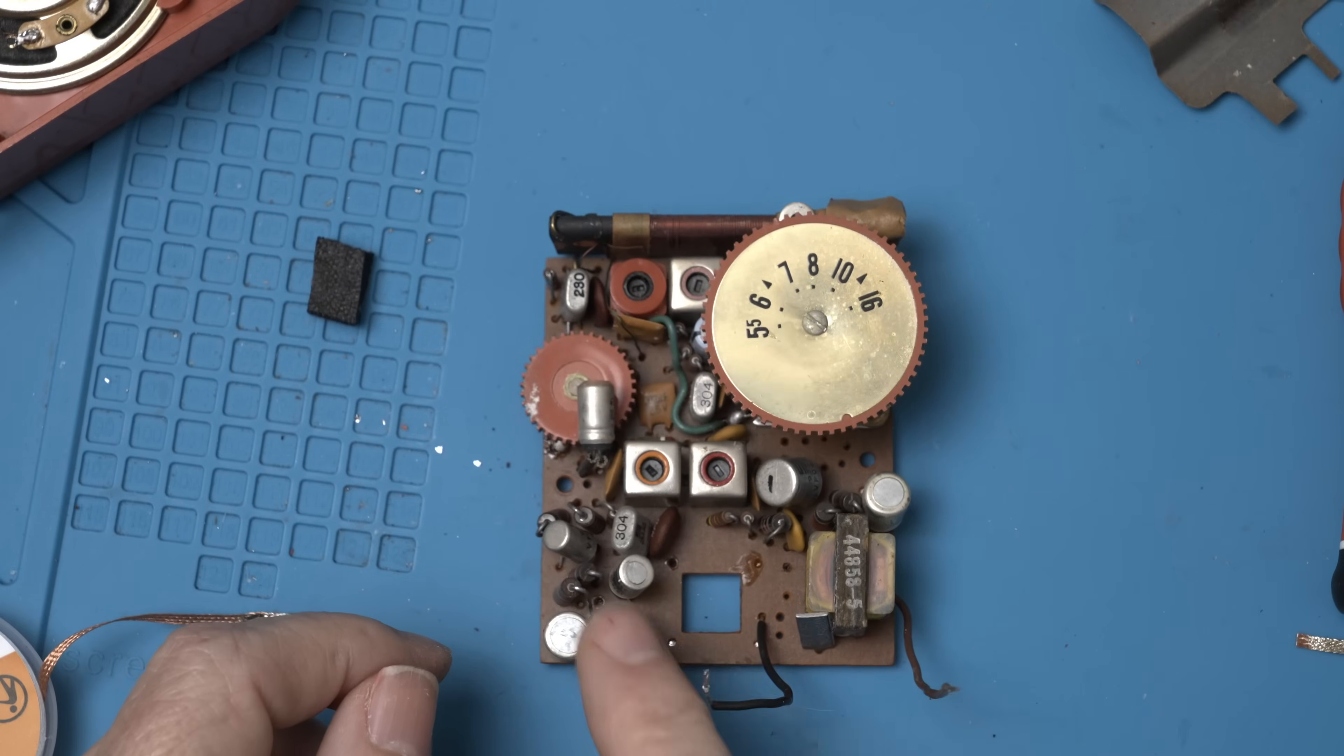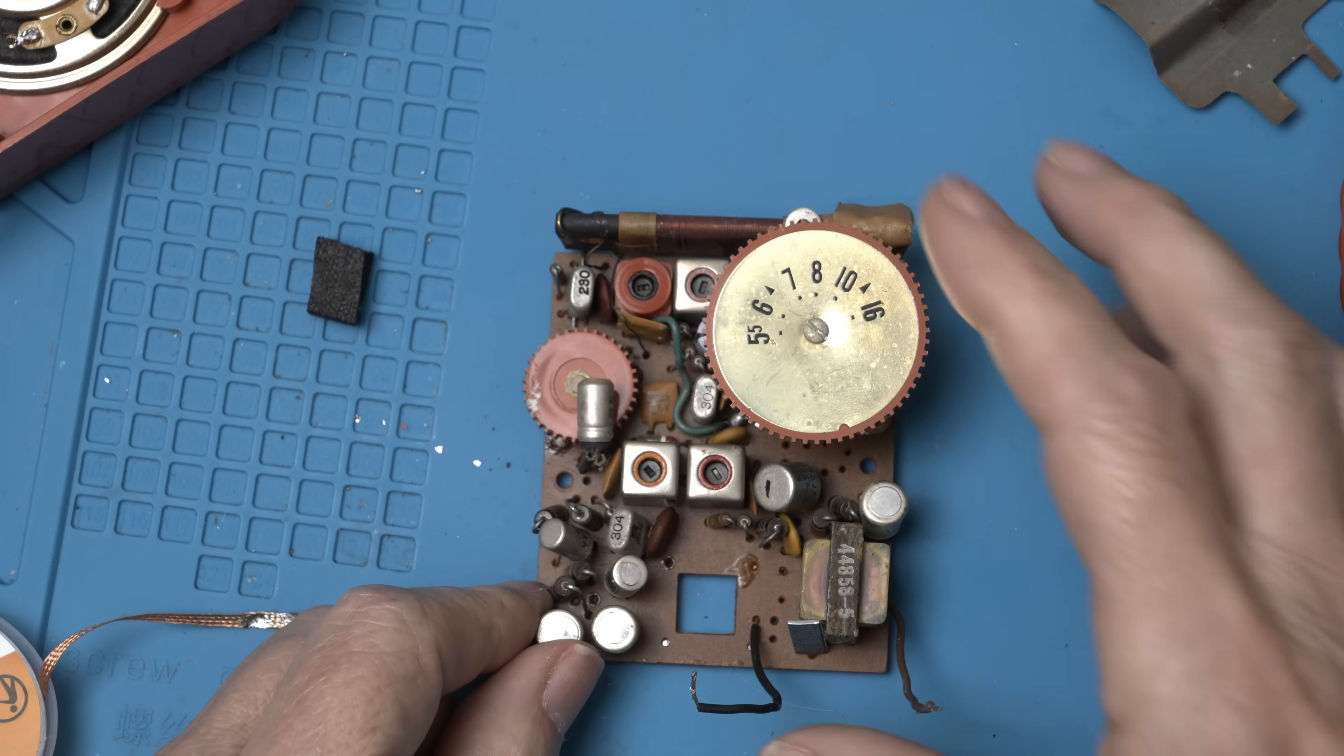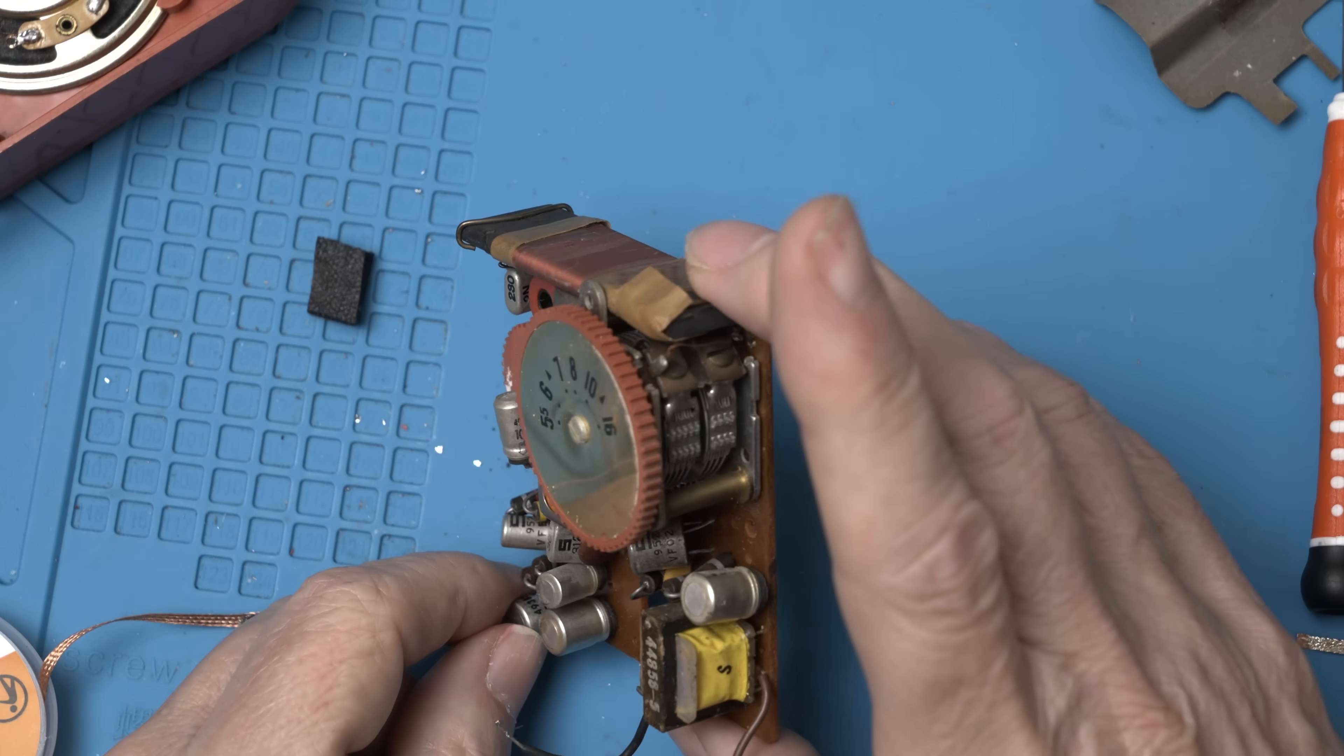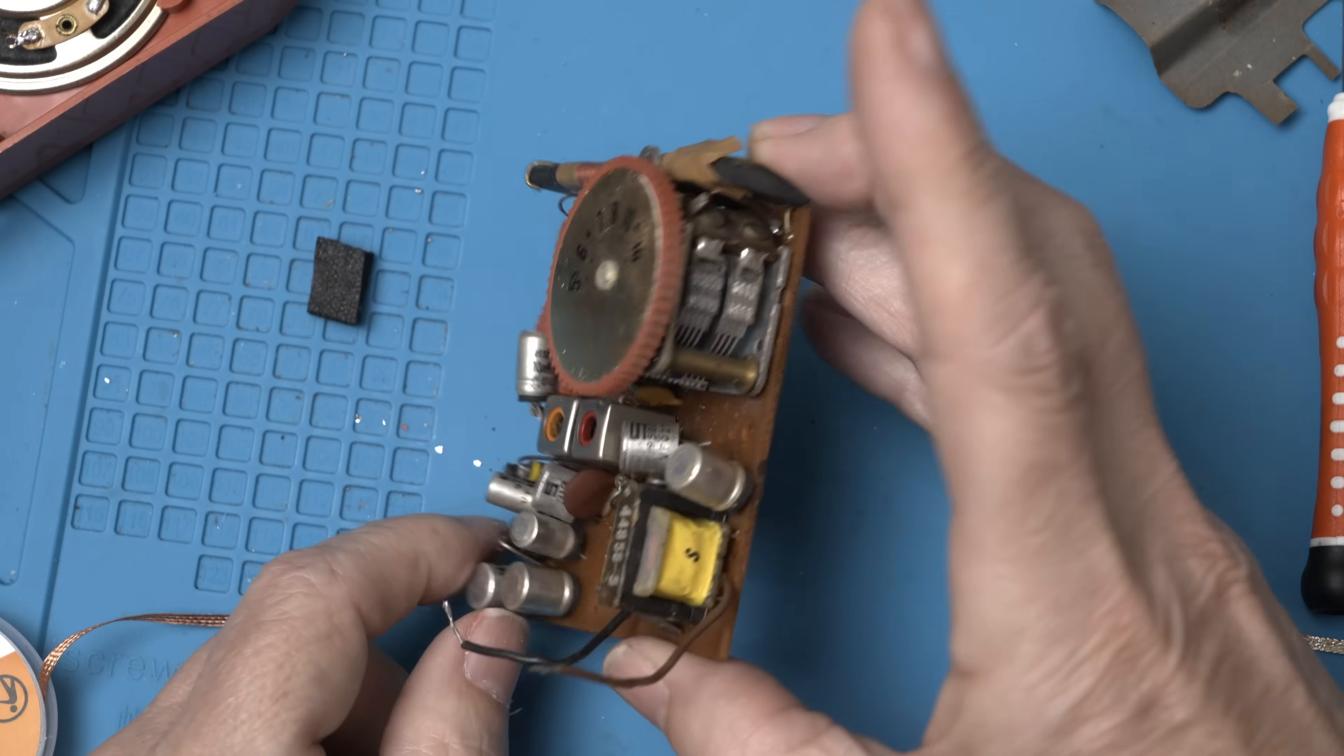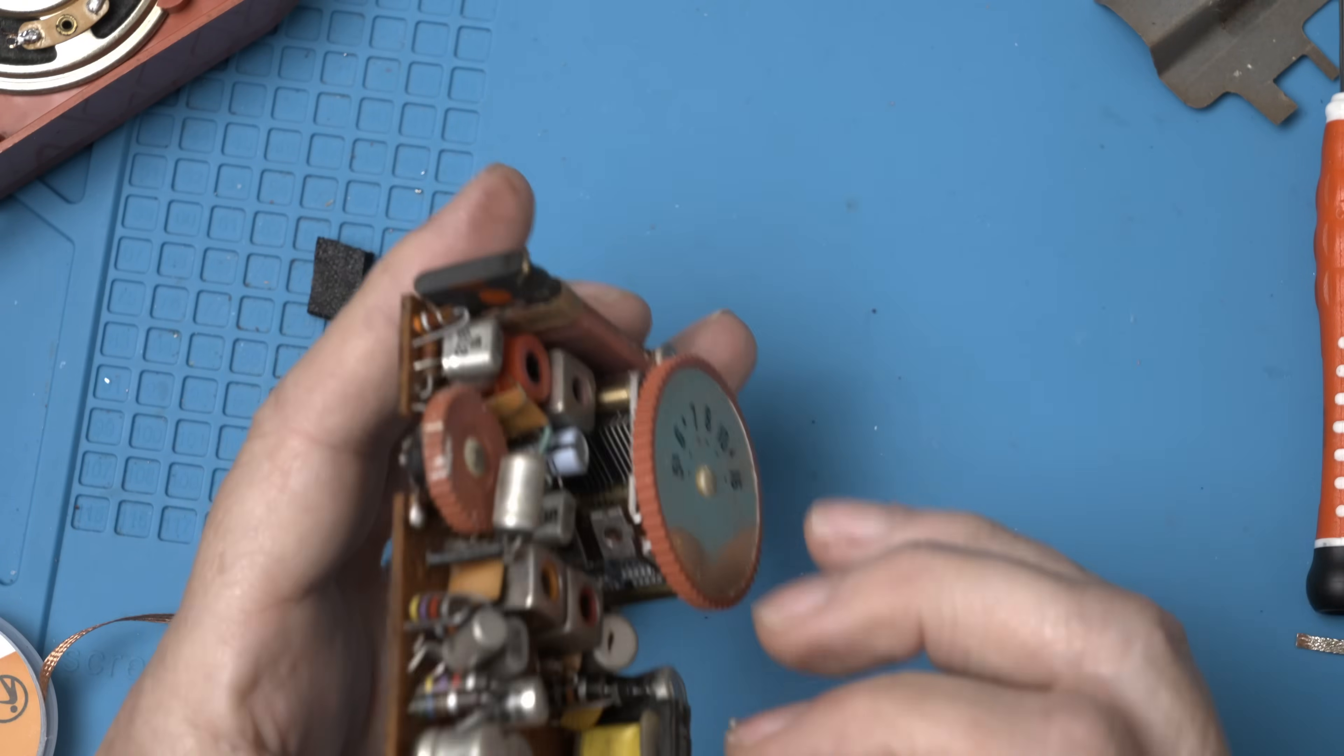So we have one, two, three, four, five, six. How could this thing have six caps in it? My God. Alright, one by one we go.